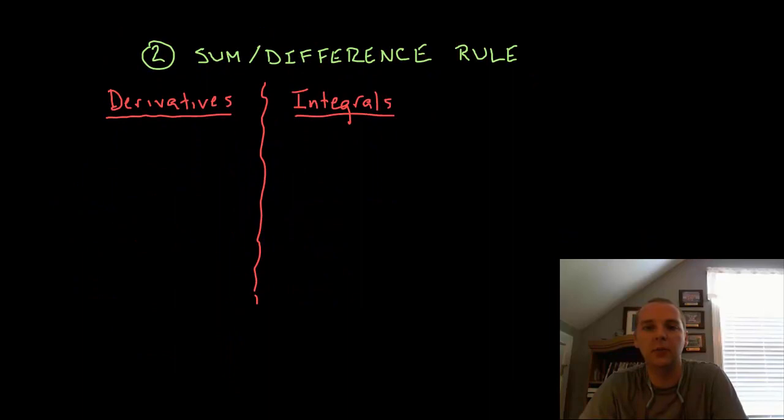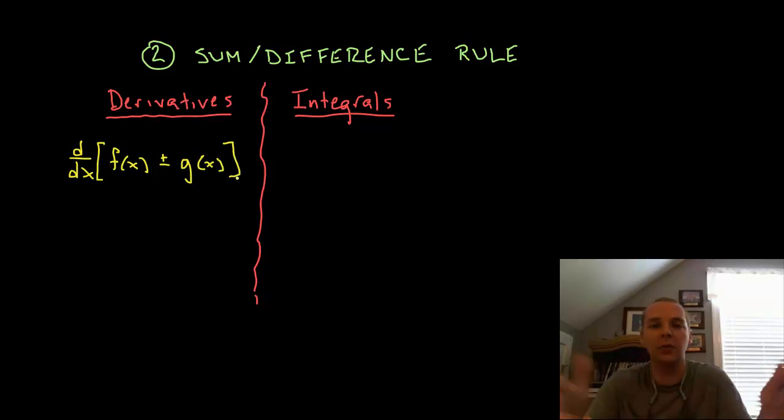Second rule is the sum and difference rule. For derivatives this said if you had a sum or difference it did not really matter which one. Derivatives split over sums and differences. So if you had a polynomial for instance, all you had to do was differentiate each individual term in the polynomial and then put those derivatives together as a sum or difference. So that was a very nice rule, it definitely made our life a lot easier.